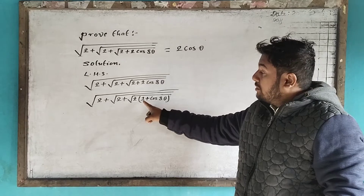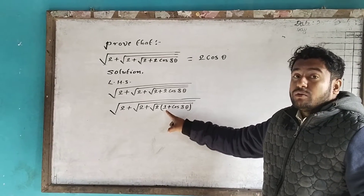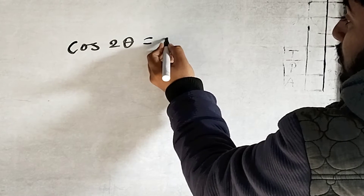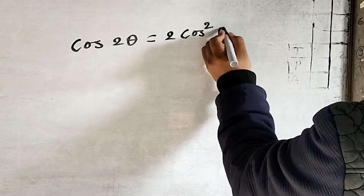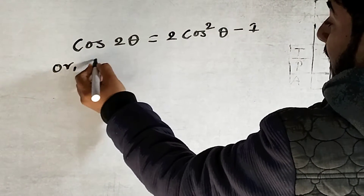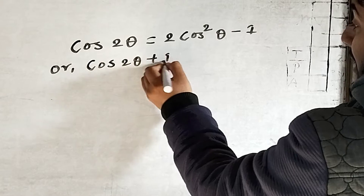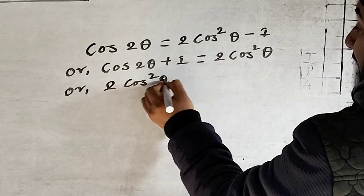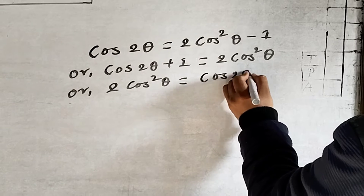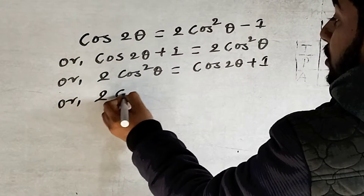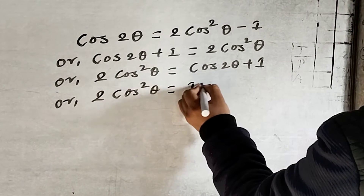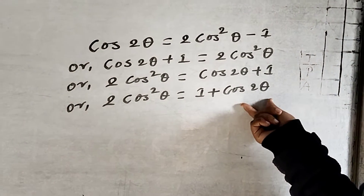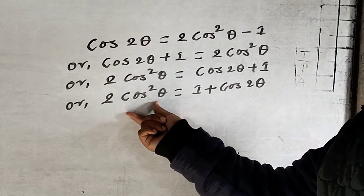1 plus 4 theta, 1 plus 2 theta, 2 cos square theta minus 1. cos 2 theta plus 1 equal to 2 cos square theta. 2 cos square theta equal to cos 2 theta plus 1. 2 cos square theta equal to 1 plus cos 2 theta.